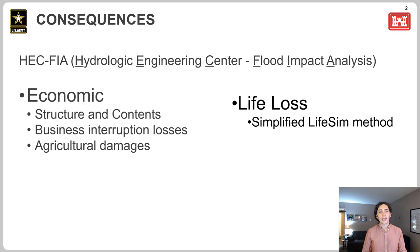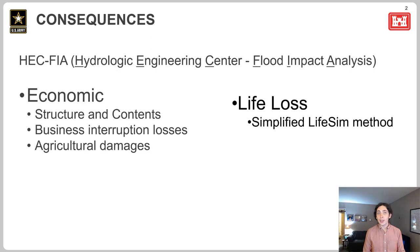It calculates direct economic damages — that would be damage to structures and the contents within them. It calculates indirect damages, so that would be the business interruptions and the hit to the economy due to the flood. It also calculates agricultural damages, so damages to the crops and the fields. Further than that, we also calculate life loss with a simplified version of the method that HEC LifeSim uses.